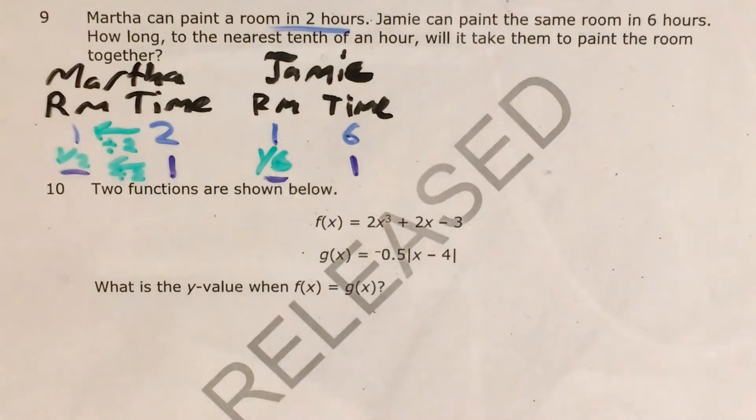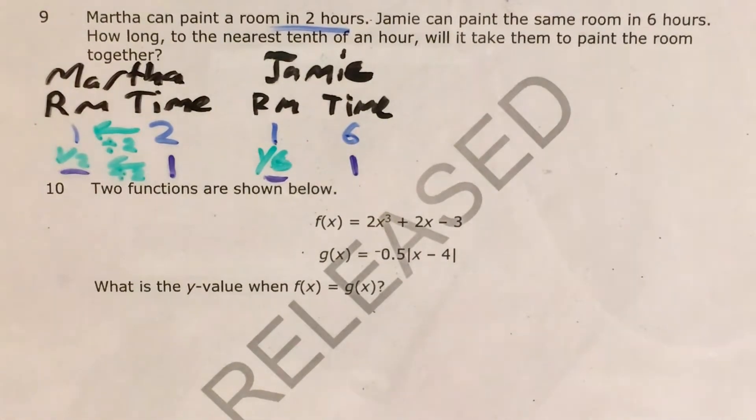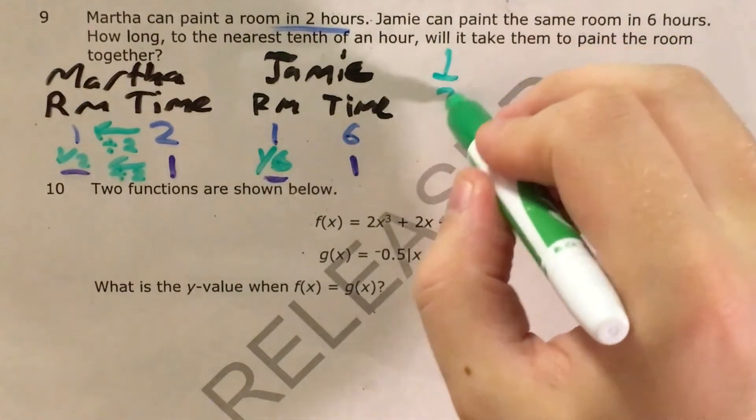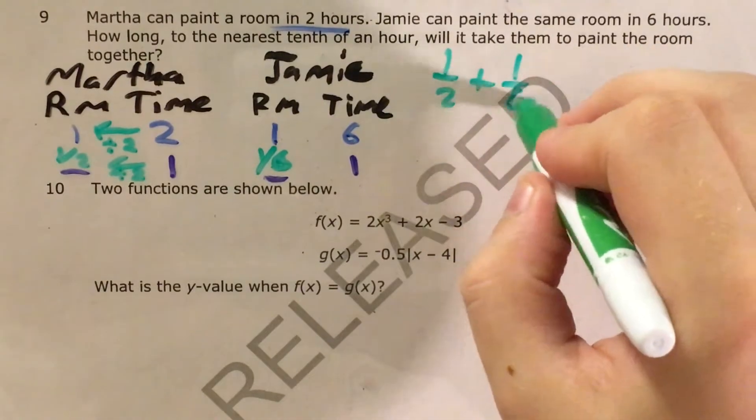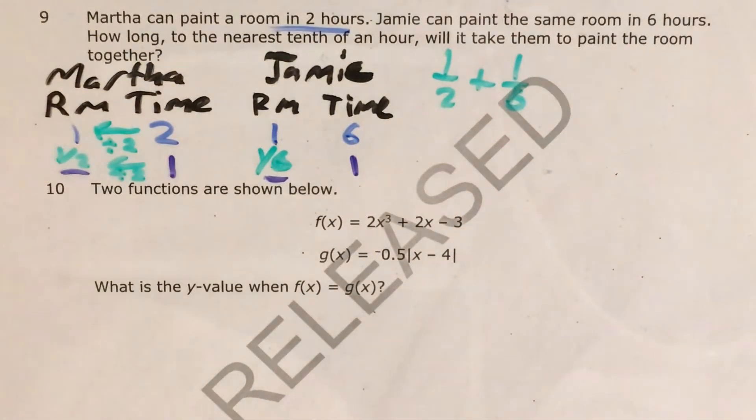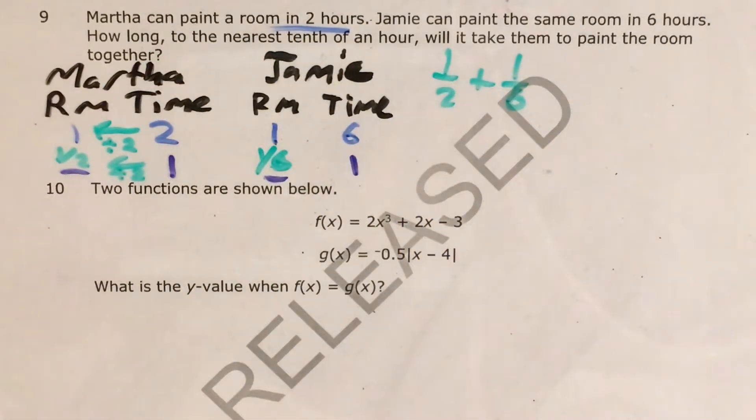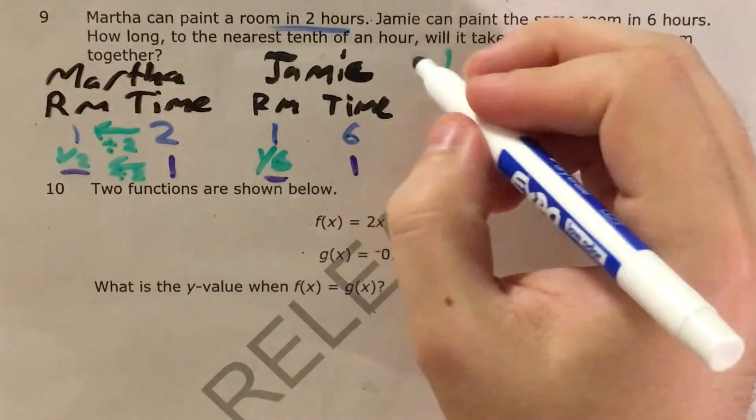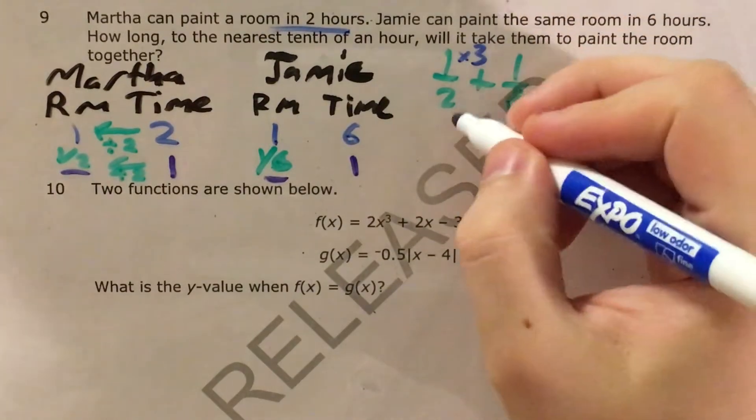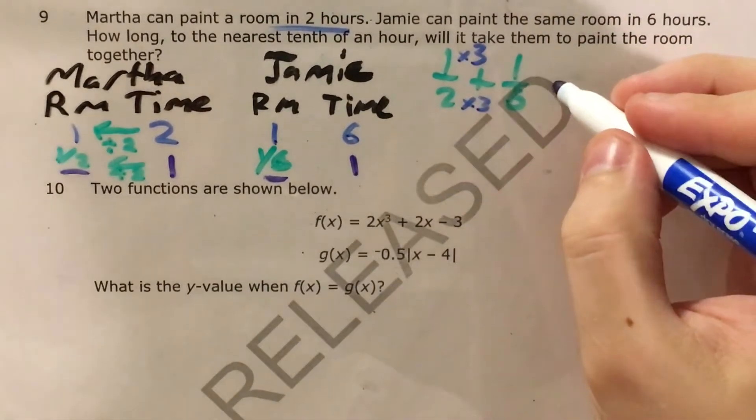So how much of the room can the two of them paint together in one hour? Well to do that we'll need to figure out one half plus one sixth. Whenever I add two fractions my first question is will my smaller denominator go into my bigger denominator? And if so how many times? Two will go into six three times.